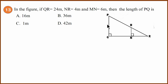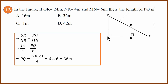Thirteenth question: in this figure, QR and NR are given. QR is the whole length and NR is a smaller length. MN is also given. To find PQ, note that these two triangles are similar, so QR divided by NR equals PQ divided by MN. Substituting and simplifying gives 36 meters. Answer B.